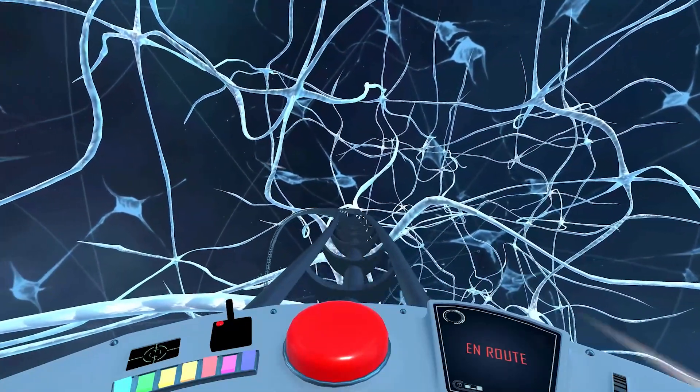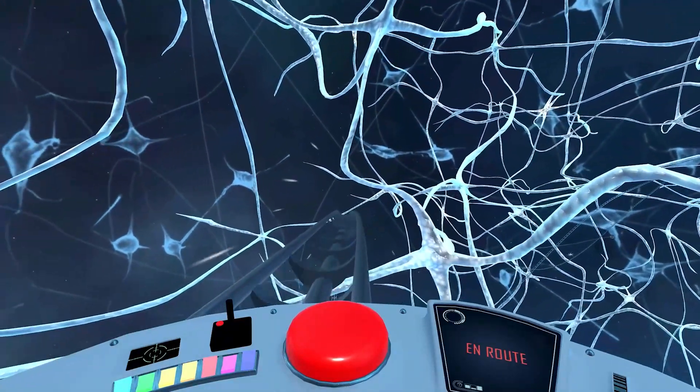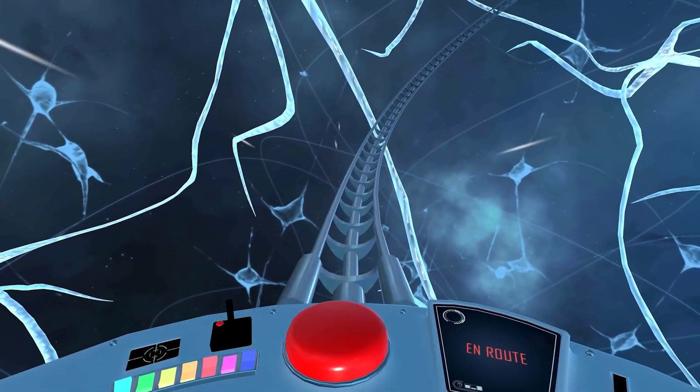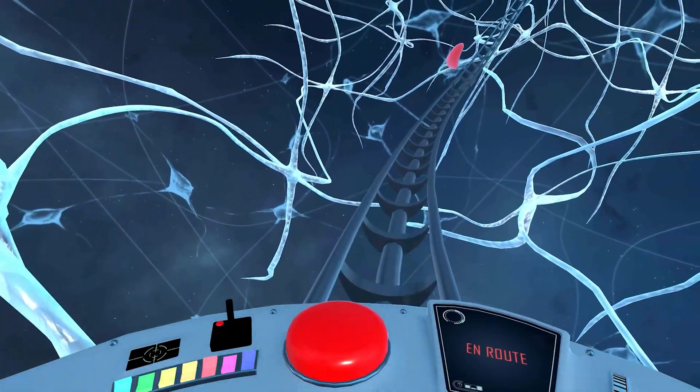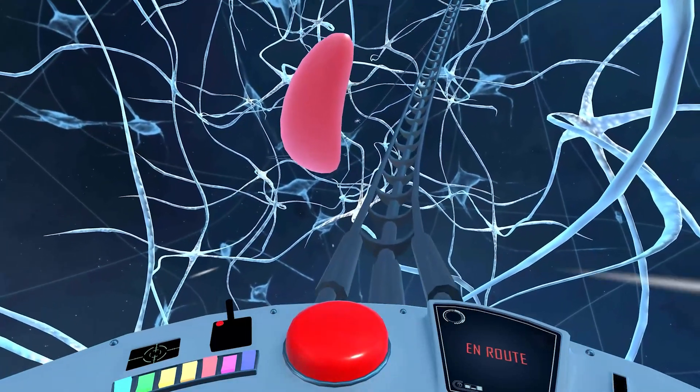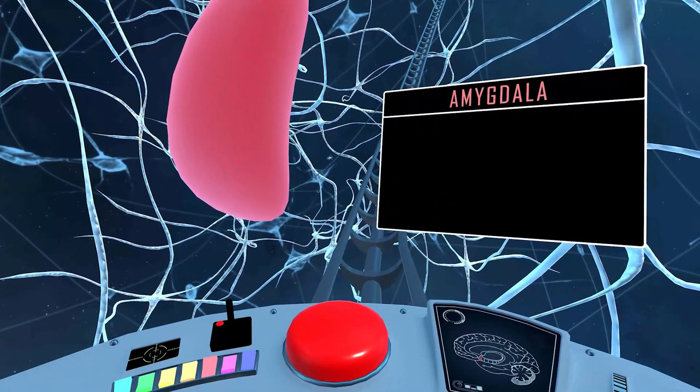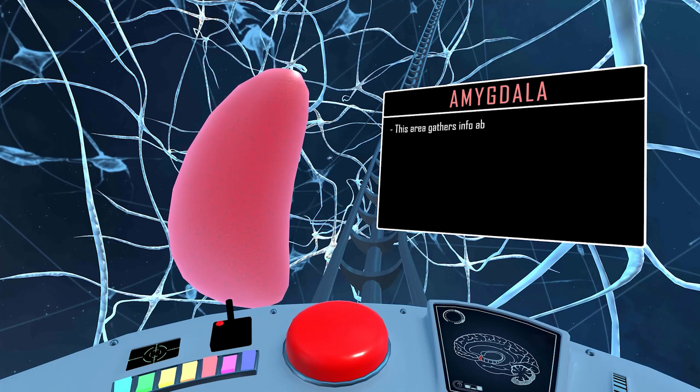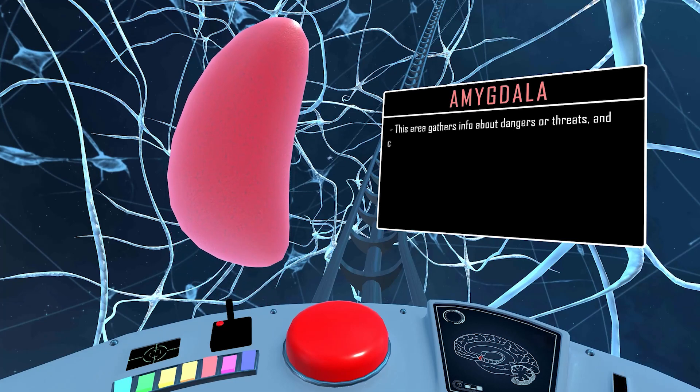We're now on our way toward the bottom of the brain, to another small but important place. Here is the amygdala. This area gathers info about dangers or threats and creates emotions such as fear,